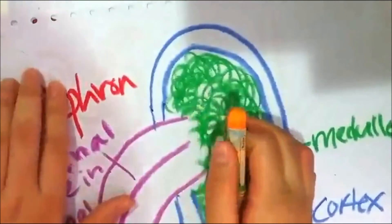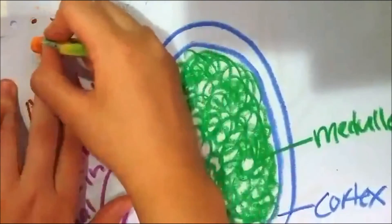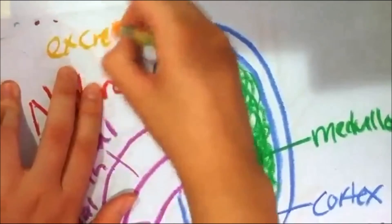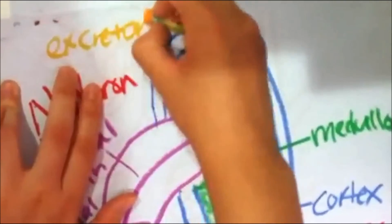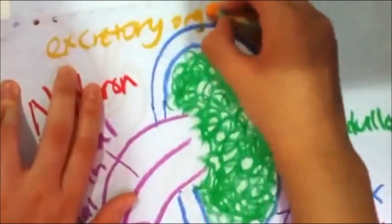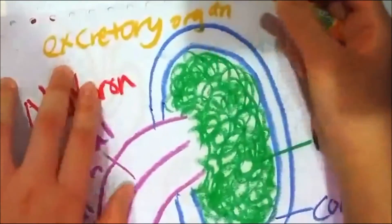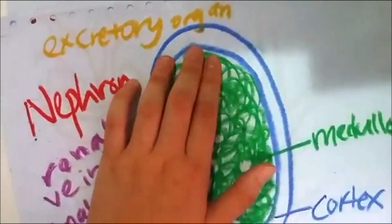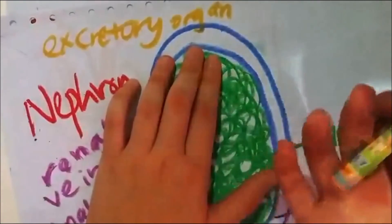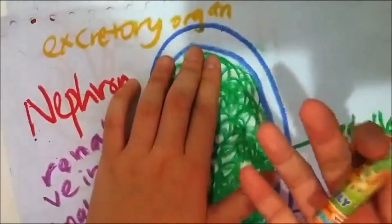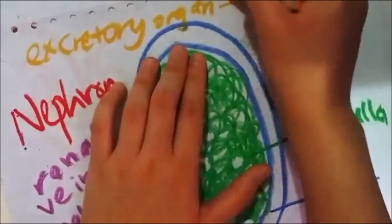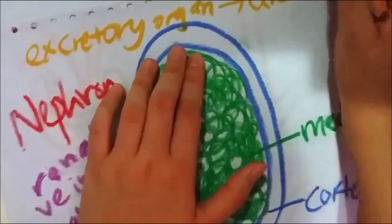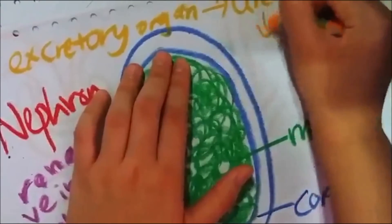Kidney is also an excretory organ. For example, it does excretion of excretory substances such as urea by forming urine.